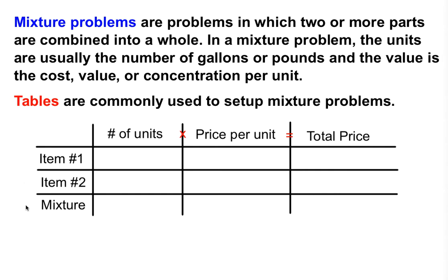This table here is a sample of what most people commonly use to set up their mixture problems. In your first column, this first corner is blank, and then you have your first two items that you're creating this mixture for. These items might have a specific unit, like the number of kilograms or the number of pounds. Then in the next column, you'll have the value of that particular unit, and your last column is total price.